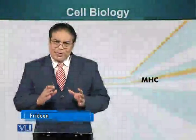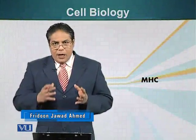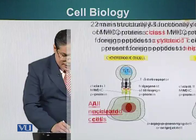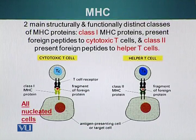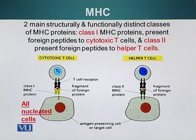Let's see how MHC proteins work by looking at their structure and how they influence T cells. There are two main structurally and functionally distinct classes of MHC proteins: Class I MHC proteins, which present foreign peptides to cytotoxic T cells, and Class II MHC proteins, which present foreign peptides to helper T cells.